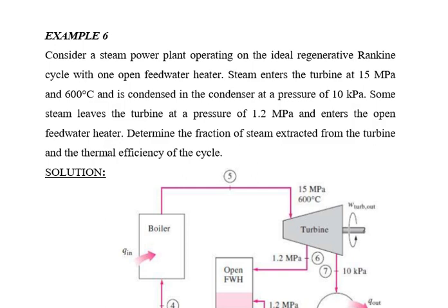Today we are discussing only the open feed water heater, so this numerical belongs to that topic. The pressure and temperature given at the turbine inlet are 15 MPa and 600 degrees Celsius — meaning superheated steam is generated. The condenser pressure is 10 kPa. Some steam leaves the turbine at a pressure of 1.2 MPa — this is the bleeding section — and enters the open feed water heater.